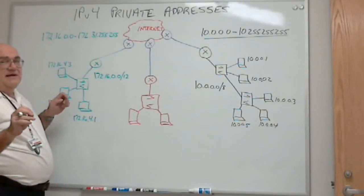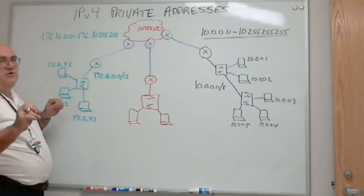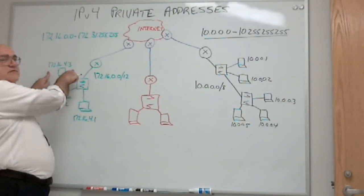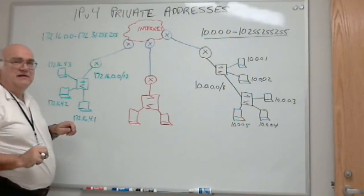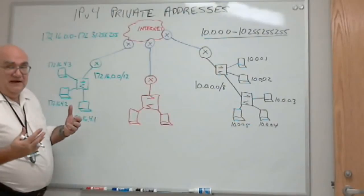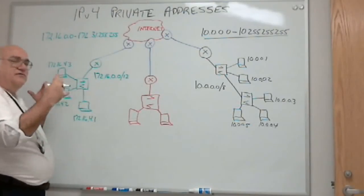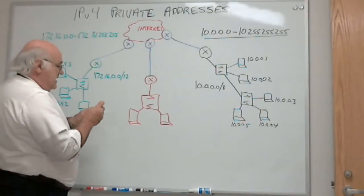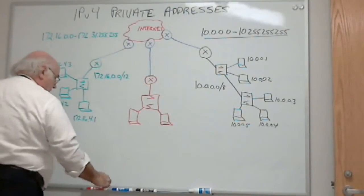Now we did say that every address on the internet has to be unique. Why can I have this network have a device 10.0.0.1, and that network have a device 10.0.0.1? Because we're not on the internet. These addresses are not routable. I can name these anything I want.